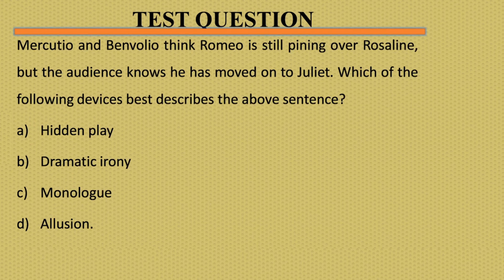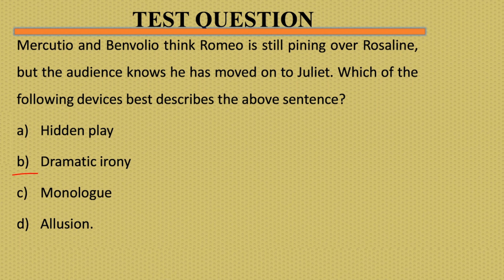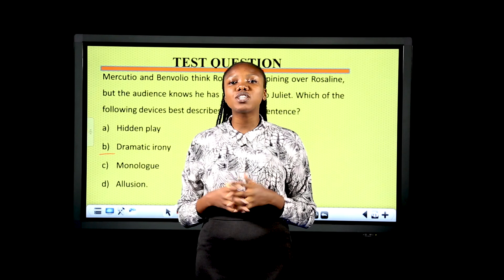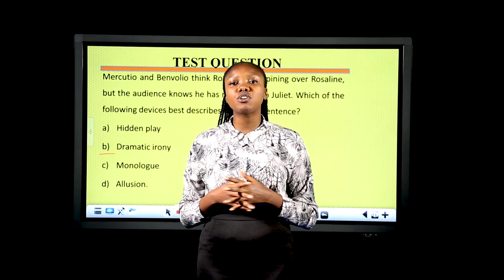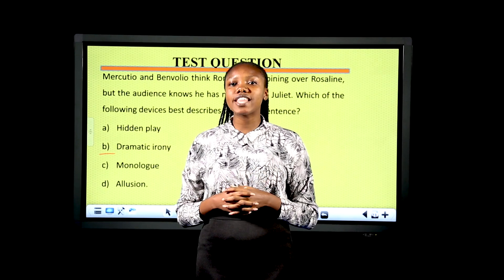Question 2: Mercutio and Benvolio think Romeo is still pining over Rosaline, but the audience know he has moved on to Juliet. Which of the following devices best describes the above sentence? A. Hidden play. B. Dramatic irony. C. Monologue. D. Allusion. The correct answer is B — Dramatic irony. I believe you now know what figurative language is and the figures of speech we have. See you in our next class. Bye!